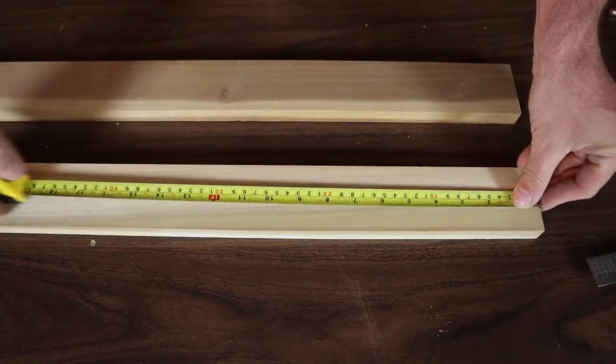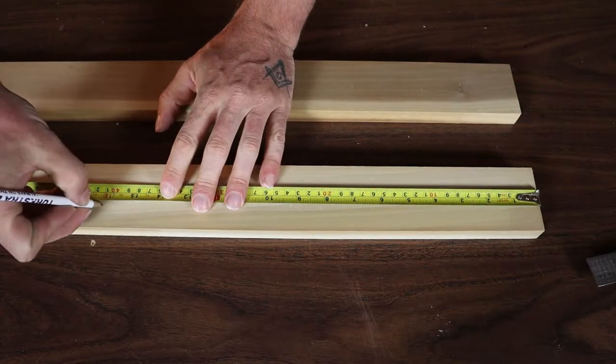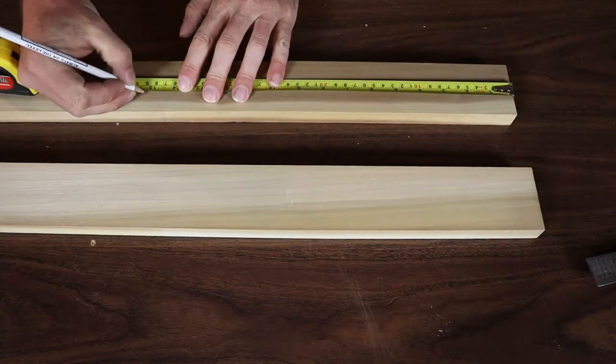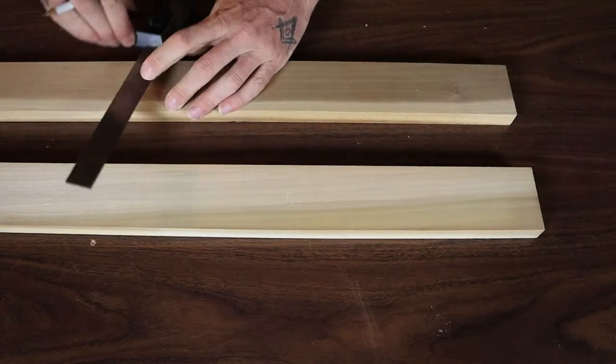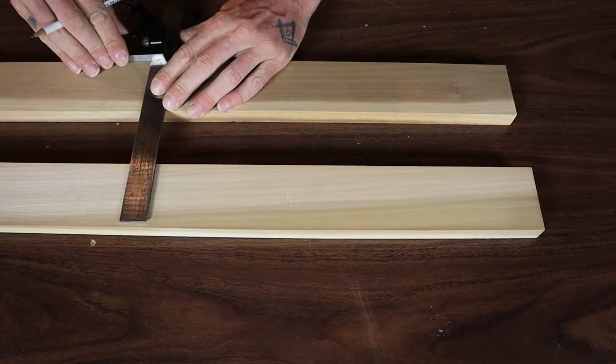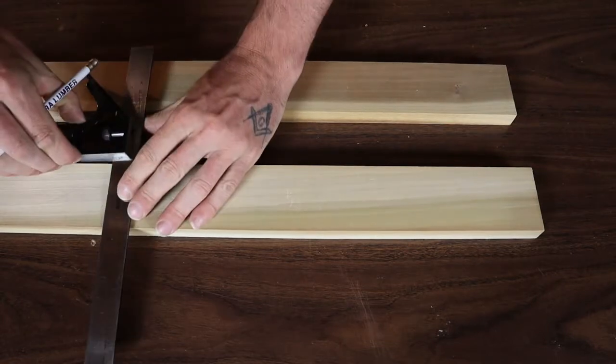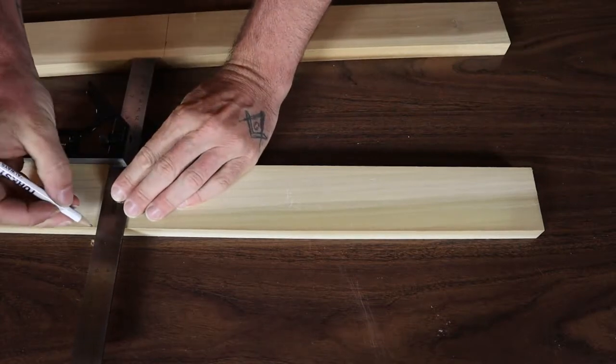We'll lay out our two pieces, one of which is going to be 16 inches long and the other is going to be 15 and a quarter. So we'll go ahead, we'll lay those out. We'll take our square because you want to make sure all the corners meet up really nice and perfect. We'll draw those lines across and then we'll get those cut and we'll keep on going.